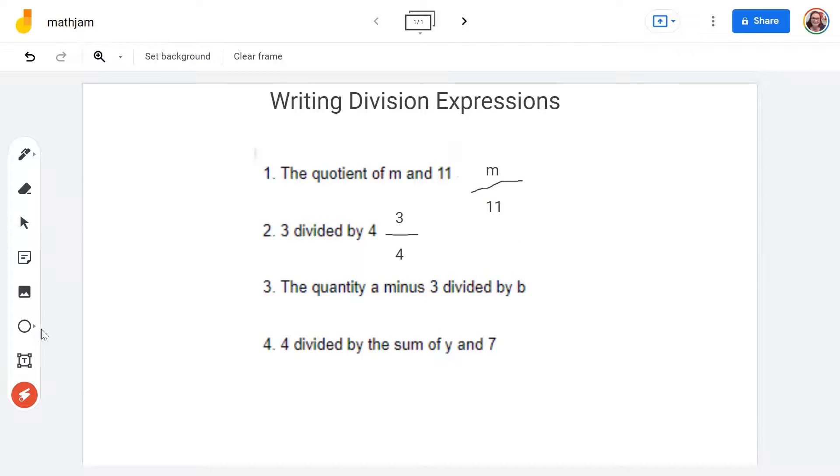So let's go ahead and take a look at question three. So this is the quantity, it says the quantity of A minus three divided by B. So the quantity of A minus three divided by B. So let's go ahead and take a look and see how we're going to answer that.